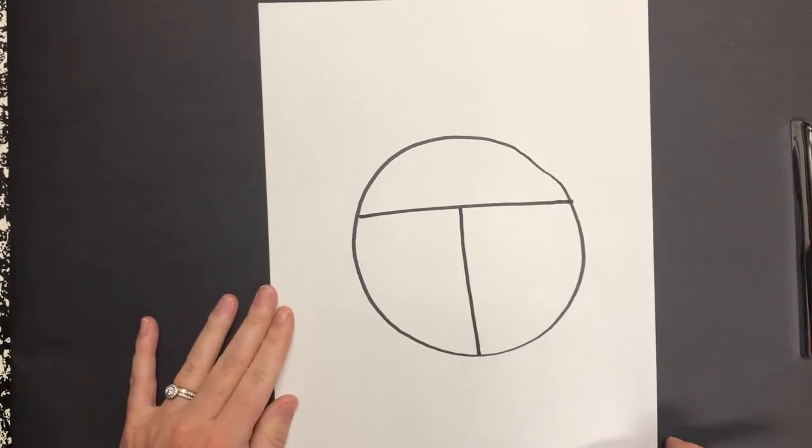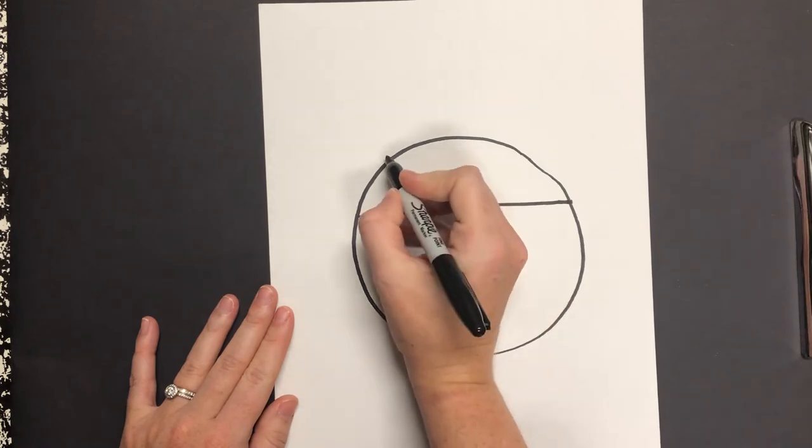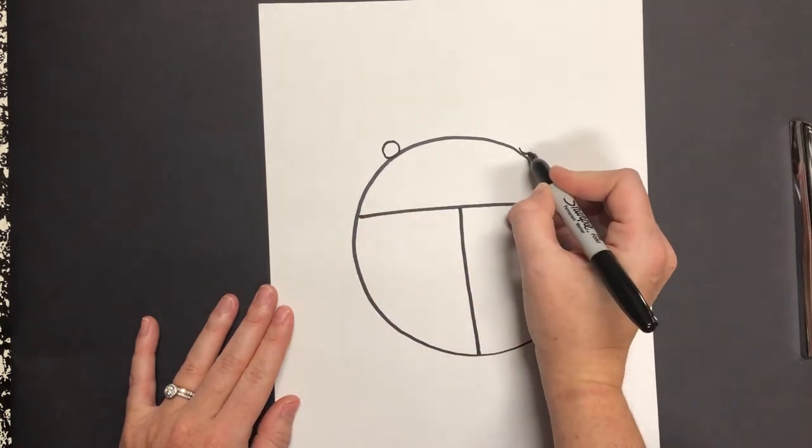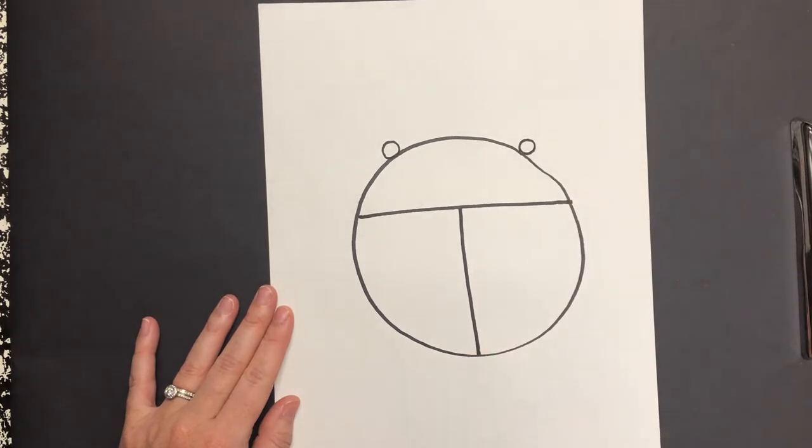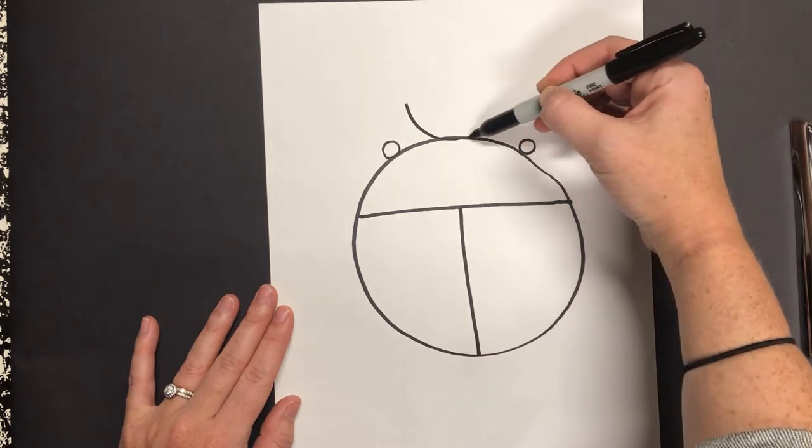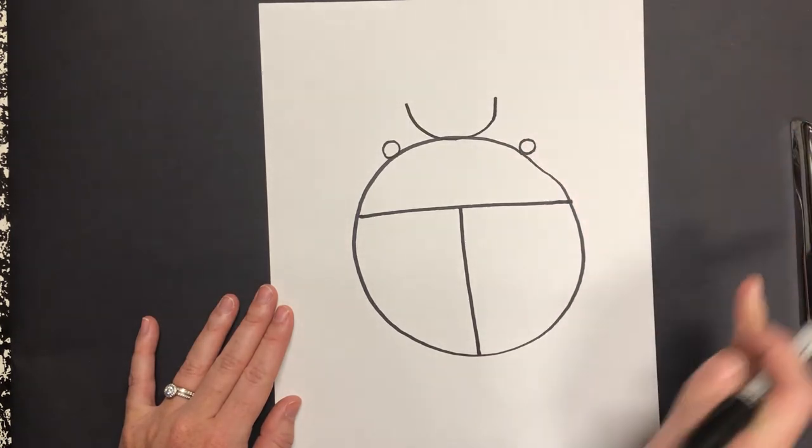The next step from here I'm going to create the eyes. There are two circles one here and one here. The next step is to create a very wide letter U and it sits right on the top. Those are the antennae.